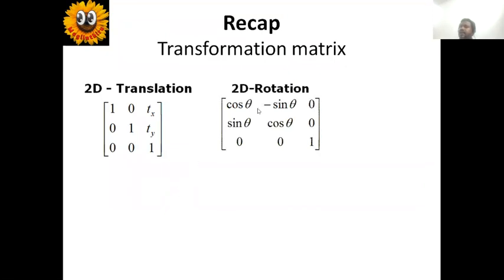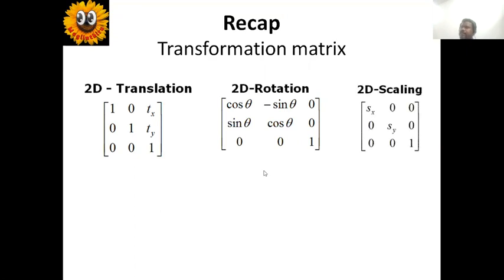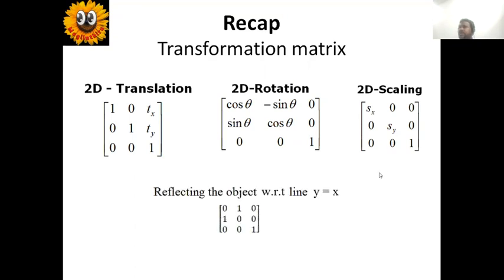2D rotation matrix contains cos theta, minus sin theta, sin theta, and cos theta. For 2D scaling, the diagonal elements are SX and SY with all other elements zero. SX refers to the scaling value in the X direction and SY refers to the scaling value in the Y direction.